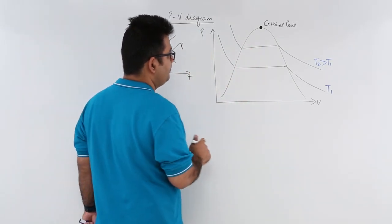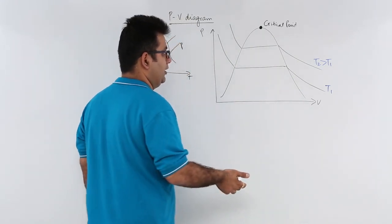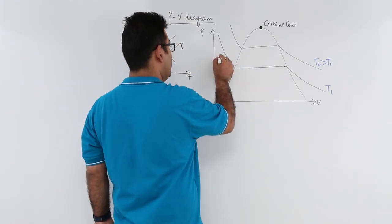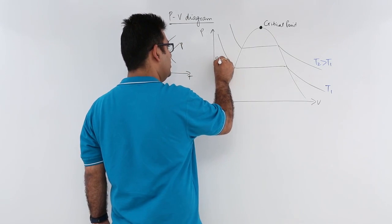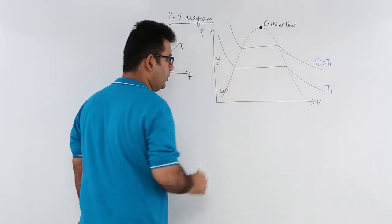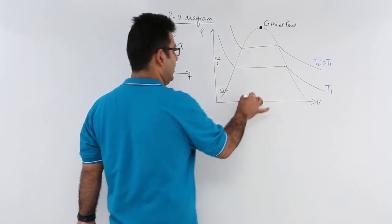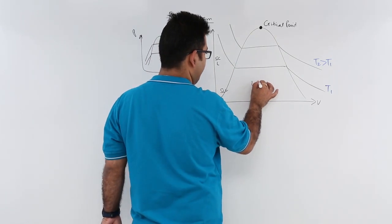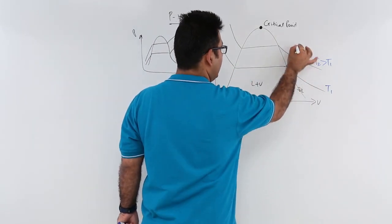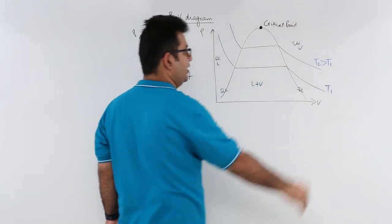Let us discuss the key regions in this diagram. This is the subcooled liquid region, this is the saturated liquid line, this is the liquid plus vapor region, this is the saturated vapor line, and this is the superheated vapor region.